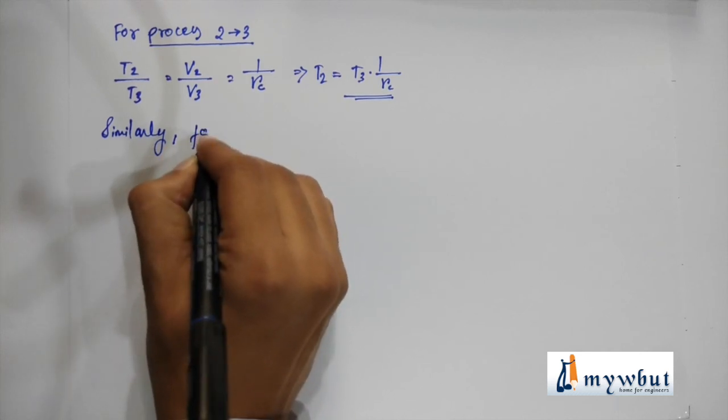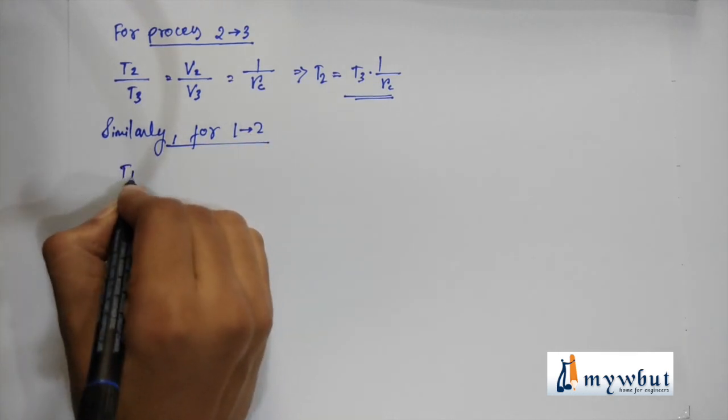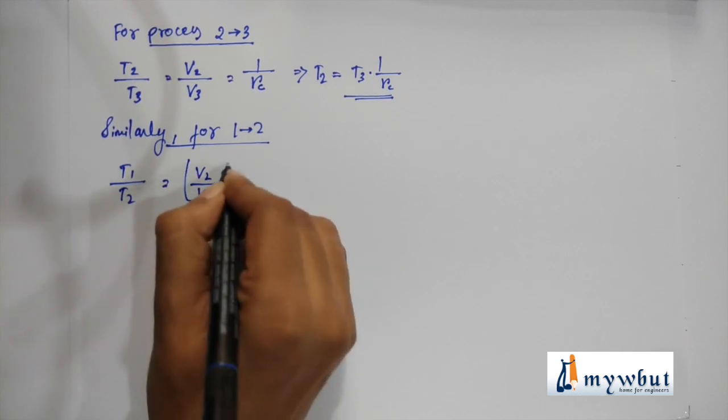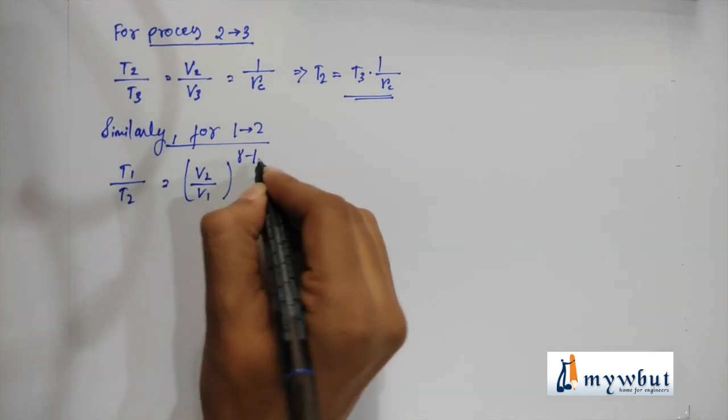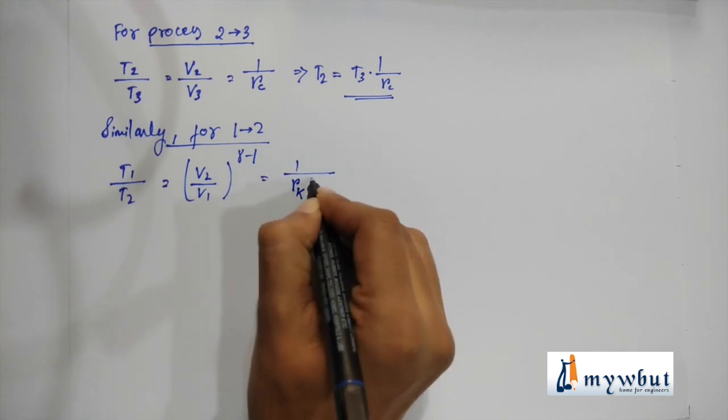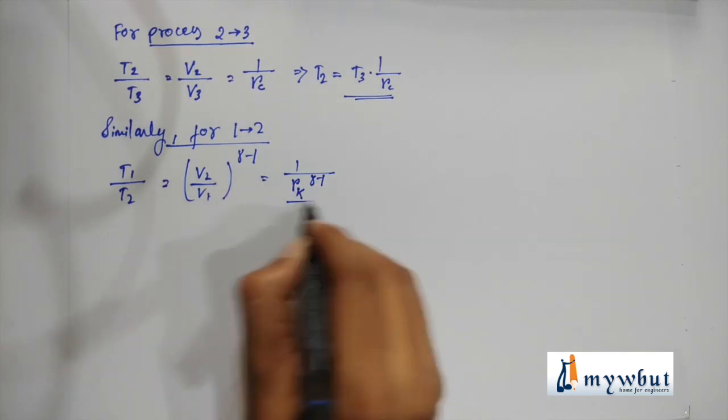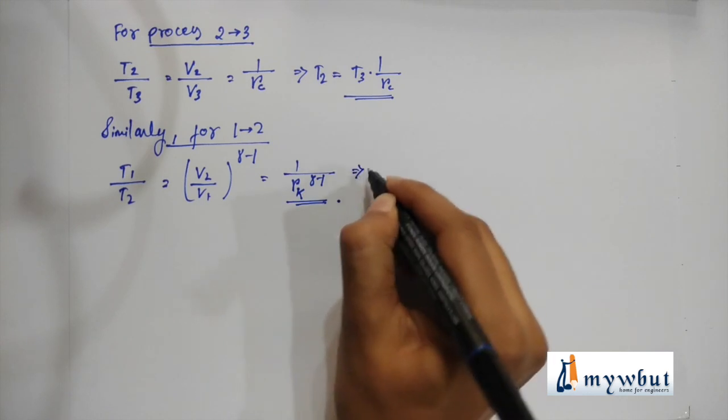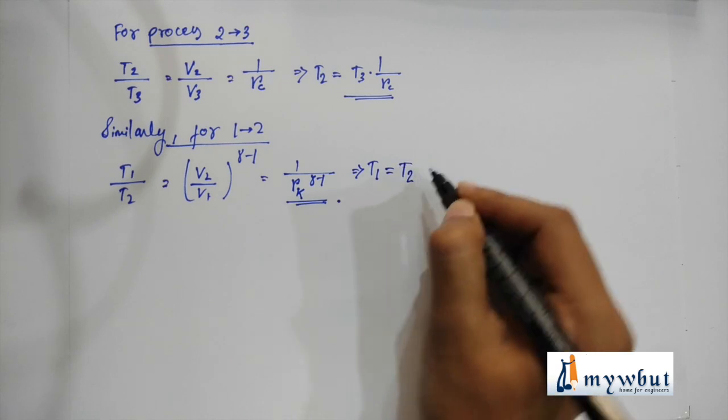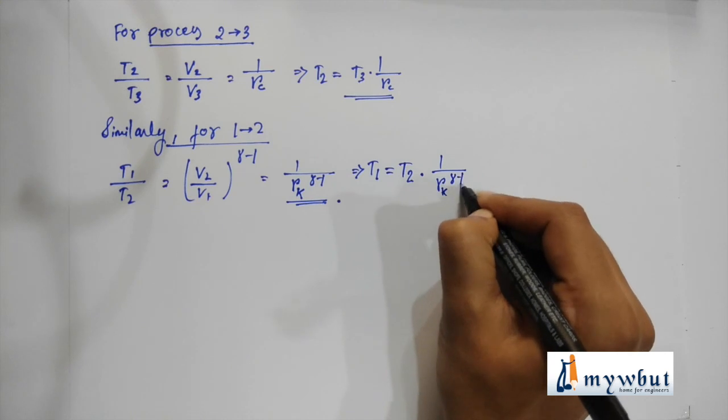Similarly, for process 1 to 2, we can define T1/T2 is equal to (V2/V1)^(gamma-1), that is equal to 1/(RK^(gamma-1)), since RK is equal to V1/V2. Which implies that T1 is equal to T2/(RK^(gamma-1)).